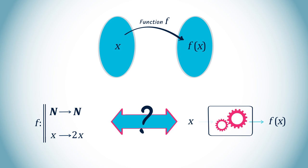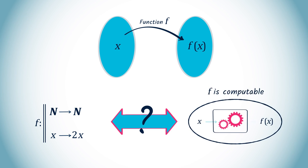This property has a name. When such a procedure exists, we say that f is computable.